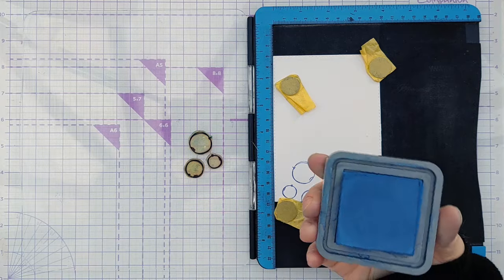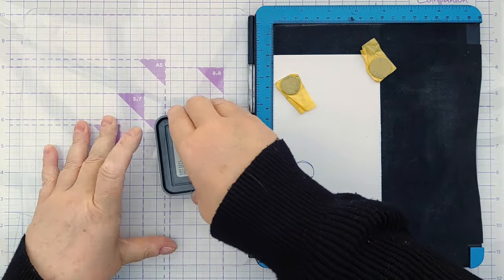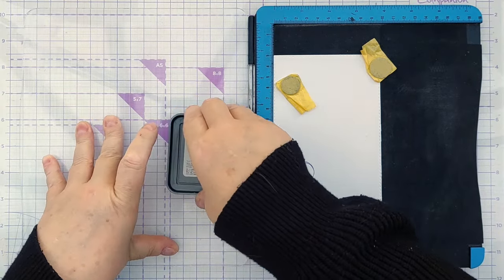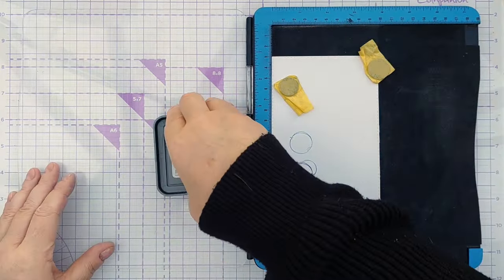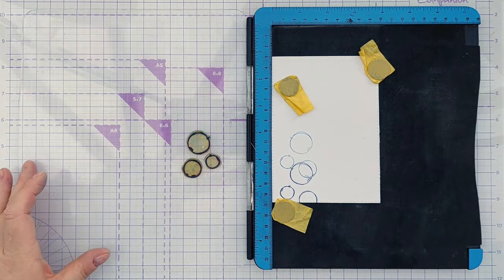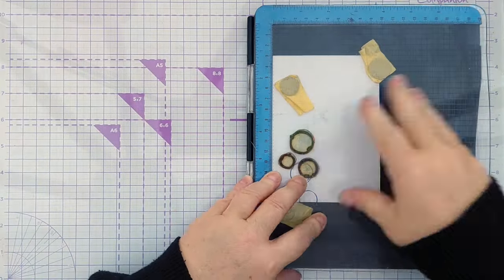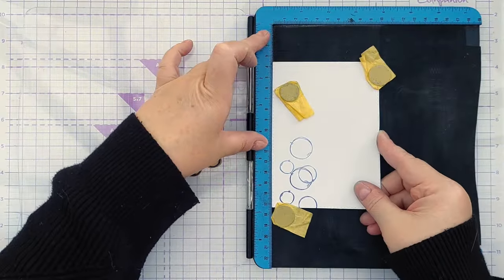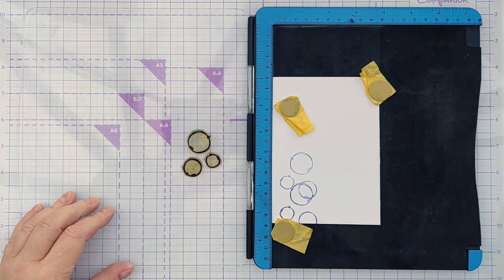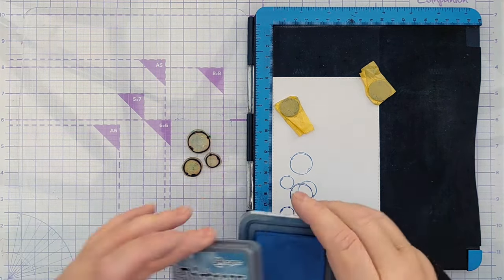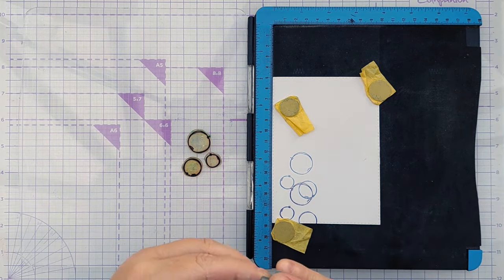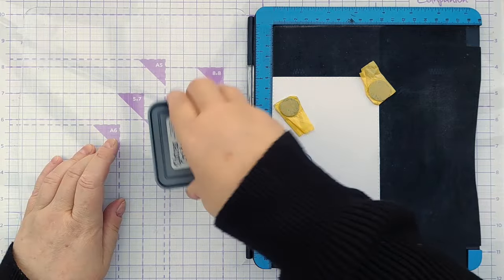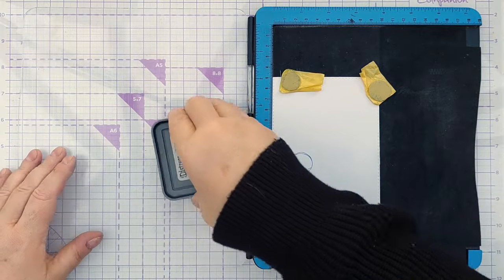And now I'm going to use Faded Jeans, which is a lovely muted blue. So I'm creating a column of these circles. I'll pull that down another three. Clean those off. I do apologise if you can hear the background noise today. There seems to be some kind of work going on, as always seems to be the case around here at the moment.